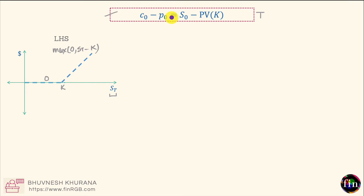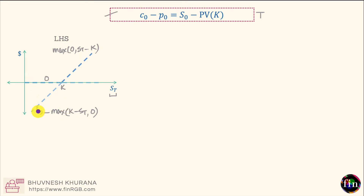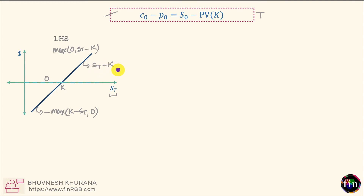If you combine these two payoffs, you get the solid line whose equation is simply S_T minus K — a line with slope 1 that intersects the horizontal axis at point K.